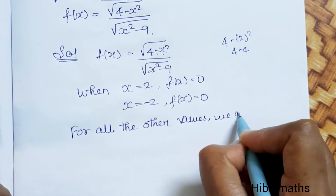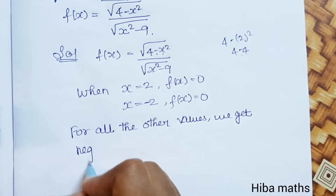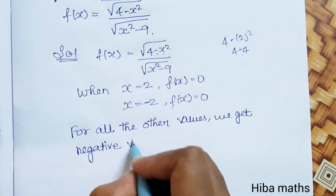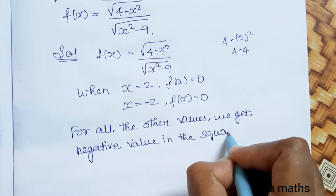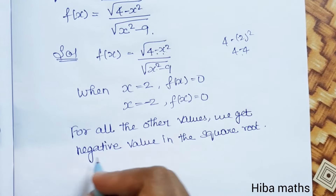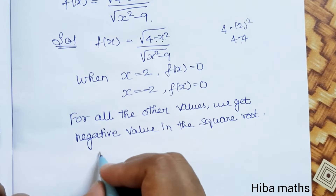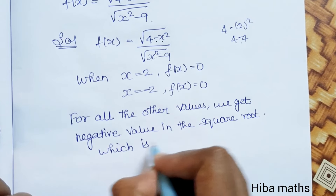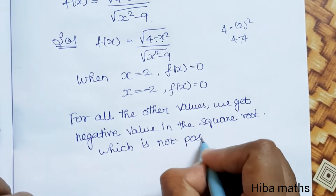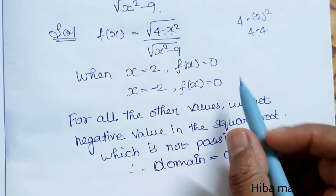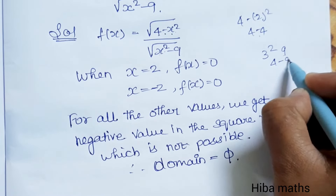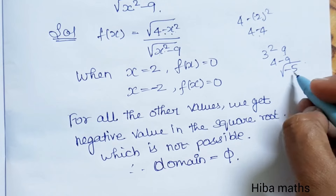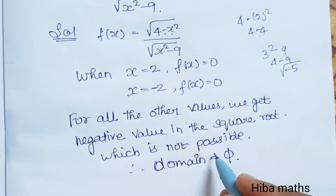For all other values we get a negative value inside the square root, which is not possible. For example, if x = 3, then x² = 9, so 4 - 9 = -5, and the square root of a negative value is not real. That is why the domain is equal to the null set.